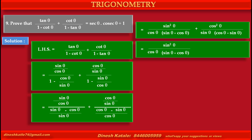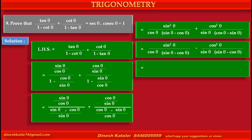In the second term, at the denominator we want the same bracket (sin θ minus cos θ). So the second term becomes minus cos squared θ upon sin θ into (sin θ minus cos θ). Taking LCM, the denominator becomes cos θ into sin θ into (sin θ minus cos θ).